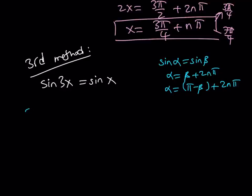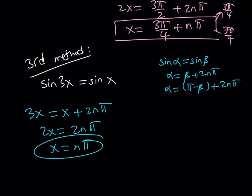From here, I can safely say that 3x equals x plus 2n pi. If I subtract x, I get 2x equals 2n pi, which means x equals n pi. We found the same solution before, obviously. That should be no surprise.